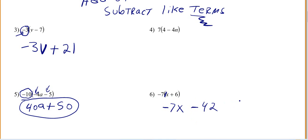7 times 6 is 42. And if you want, you can rewrite it as negative 7x minus 42. This looks a little bit neater. You don't have to do that. I don't care if your answer looks a little bit sloppy like that.